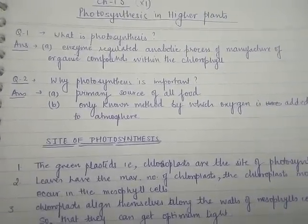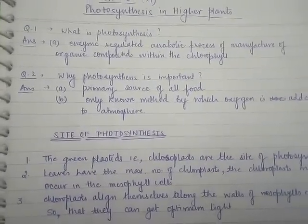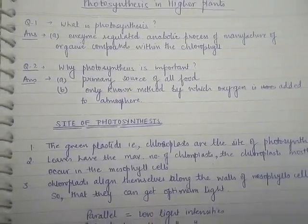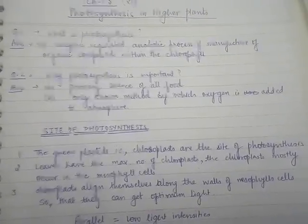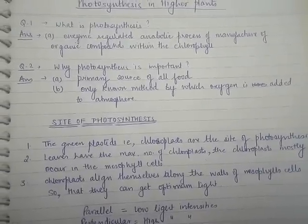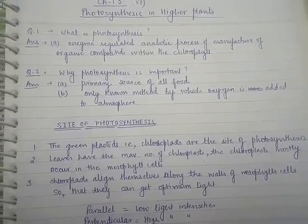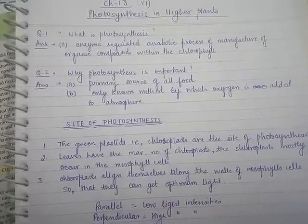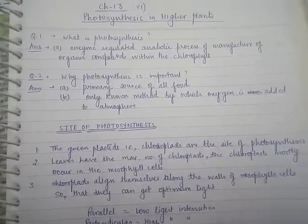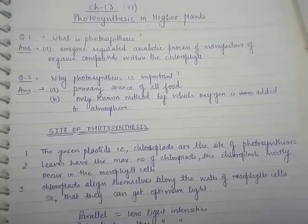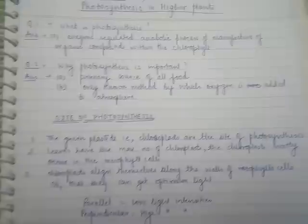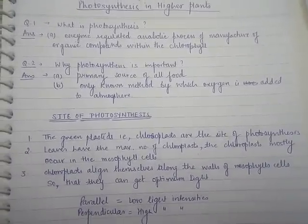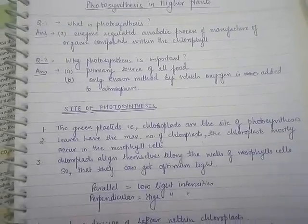Photosynthesis is an enzyme-regulated anabolic process of manufacture of organic compounds within the chloroplast. Photosynthesis is important because it is the primary source of all food. If there is no photosynthesis, there will be no starch formation, and animals and mammals will be affected. It is also the only known method by which oxygen is added to the atmosphere.